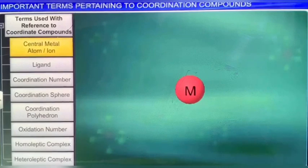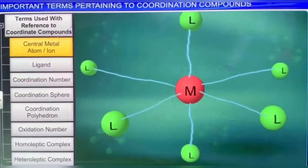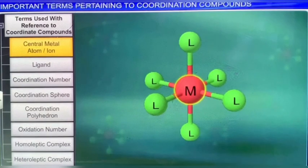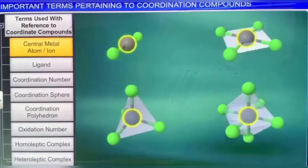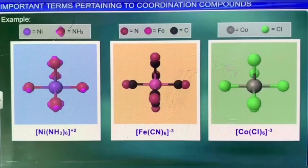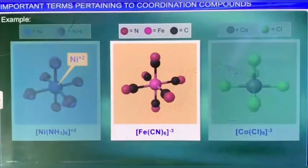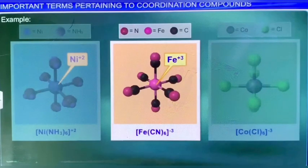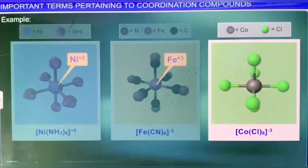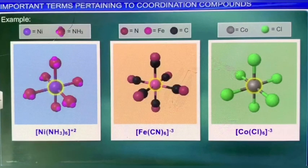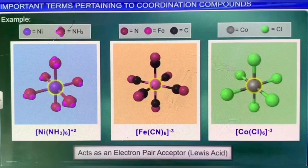The first term is central metal atom or ion. The atom or ion to which one or more neutral molecules or anions are attached in a definite geometrical arrangement around it is called the central atom or ion. For example, the central metal ion in [Ni(NH₃)₆]²⁺ is Ni²⁺; in [FeCl₆]³⁻ is Fe³⁺; and in [CoCl₆]³⁻, it is the Co³⁺ ion. As the central metal atom or ion acts as an electron pair acceptor, it is also referred to as a Lewis acid.